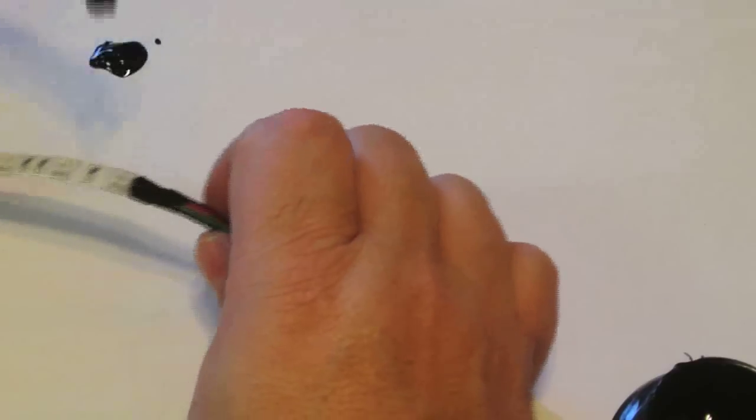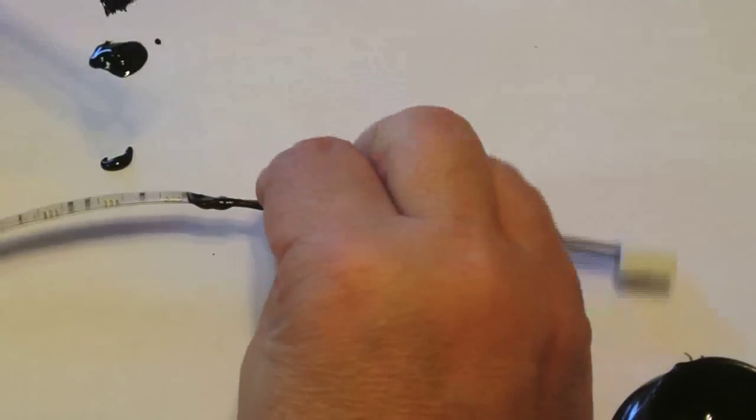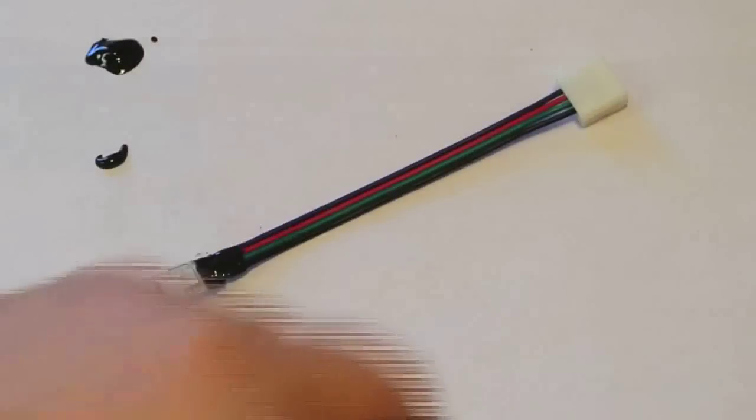As well as the exposed part of the LED strip. And so you want to put some kind of something down here when you do this. There we go. And we can get this liquid tape in different colors.